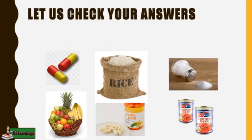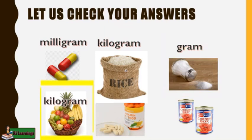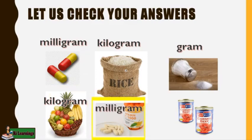Let us check your answers. For number one, capsule, the answer is milligram. Number two, kilogram. Number three, gram. Number four, kilogram. For number five, vitamin, the answer is milligram. And for number six, the answer is gram. What is your score, children? Very good.